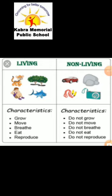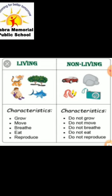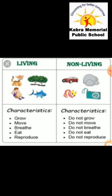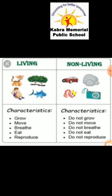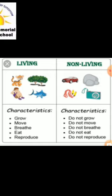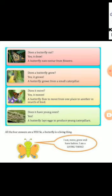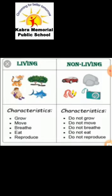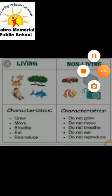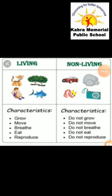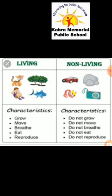Now let's learn some characteristics or features of living and non-living things. You can see animals, a tree, a human being, a water animal, and non-living things on the chart. The first characteristic: living things can grow, and non-living things do not grow.